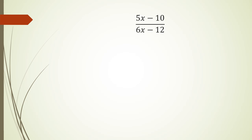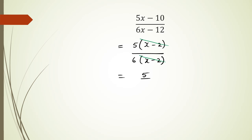Next: (5x minus 10) over (6x minus 12). You might think you can't do anything with this, but you can. The first step is to factorize. The numerator factorizes to 5(x minus 2), and the denominator factorizes to 6(x minus 2). Now (x minus 2) is a common factor — cancel them out, and the simplified answer is 5 over 6.